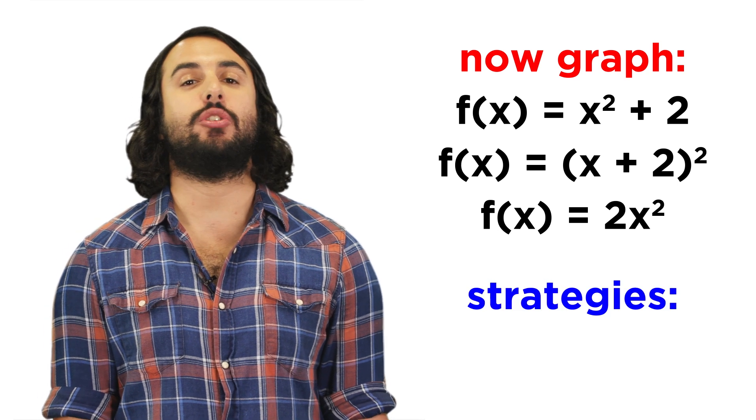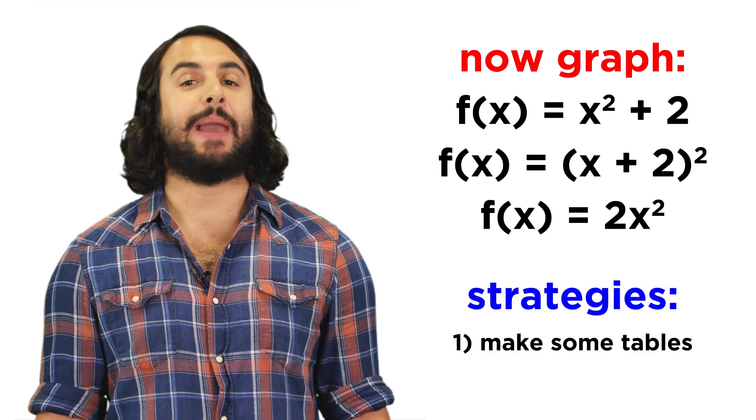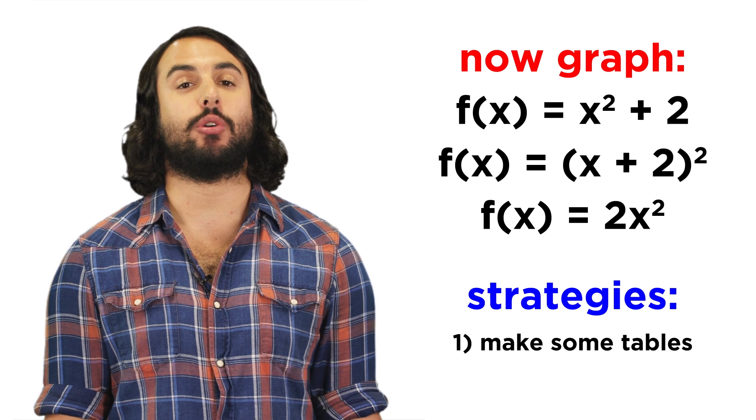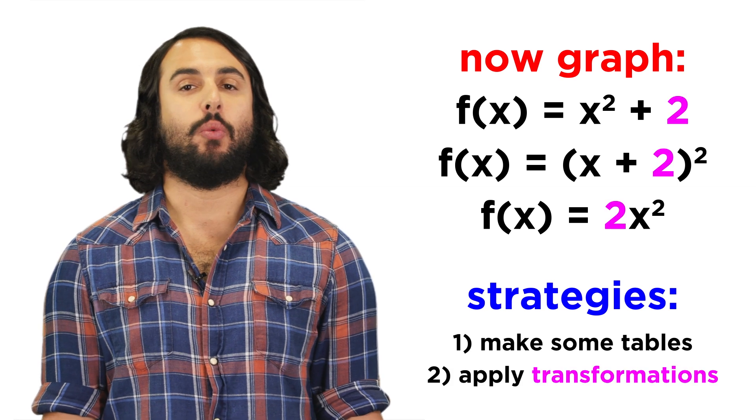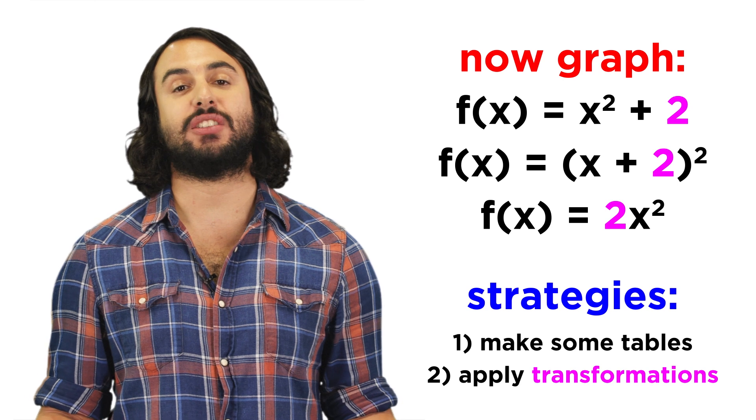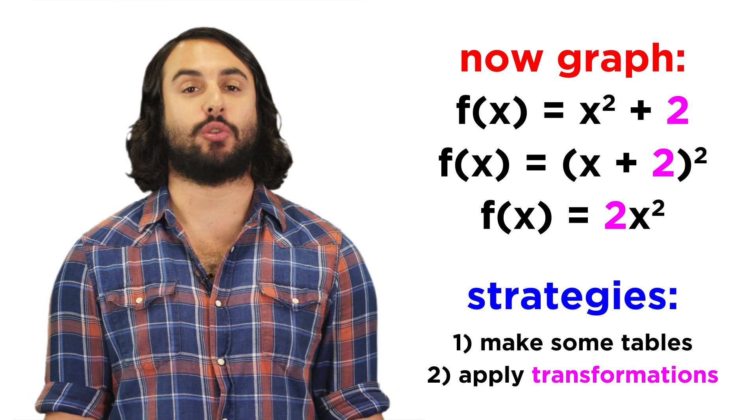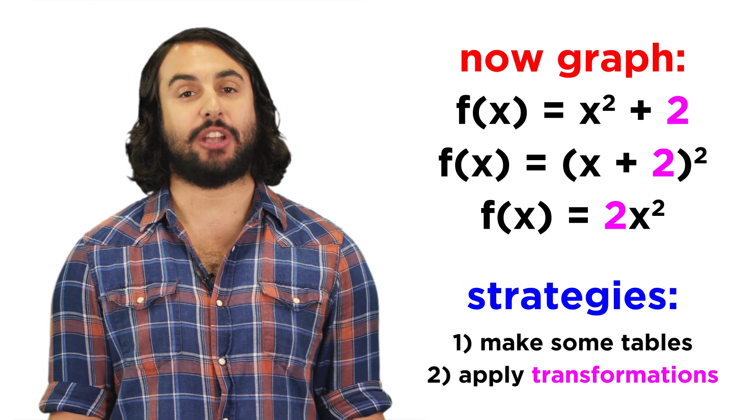In each case, we could do one of two things. We could make a table and find some ordered pairs to plot, or we could recognize how the number two is transforming the graph of x squared in a different way for each case.